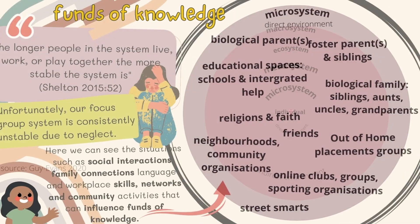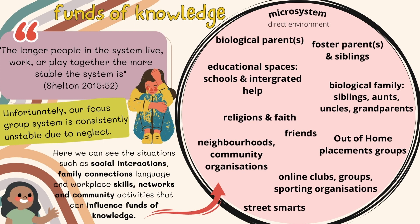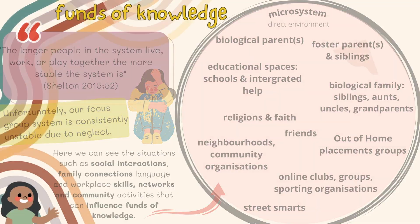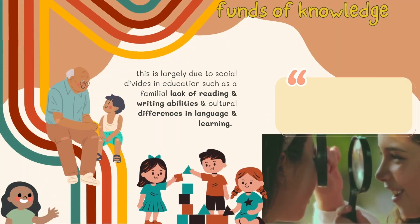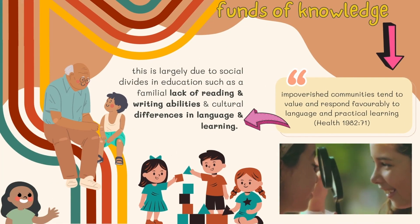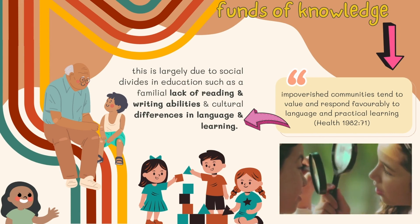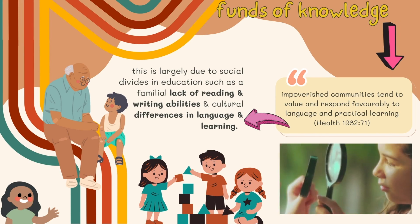Their exposure to parental drug abuse and dealing has taught them how to manage and converse with people under the influence. Our children have also developed street smarts, allowing them to be resourceful, quick thinking, and adaptive to new situations. Additionally, as Heath determines, impoverished communities tend to respond favourably to practical learning. Thus, these children enjoy hands-on activities.